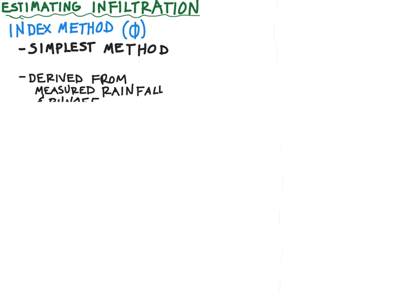This is the simplest method for estimating infiltration, which also means that it very often underestimates the total infiltration. The φ method is derived from measured rainfall and runoff, and so you have to know the rainfall and the runoff in a watershed. It is not transferable from watershed to watershed, and really it's different from storm to storm.